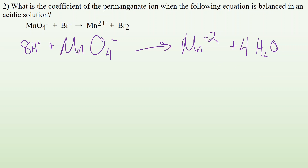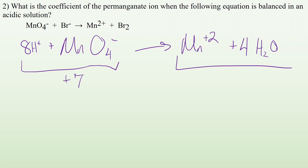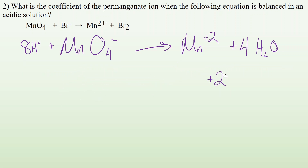Now I need to balance the charge by adding electrons. On the left I have eight pluses and a single minus, so I have plus seven on the left, and on the right I have just a plus two. I'm going to have to bring that positive seven down to positive two. I'm going to add five electrons. So: 5e⁻ + 8H⁺ + MnO₄⁻ → Mn²⁺ + 4H₂O.